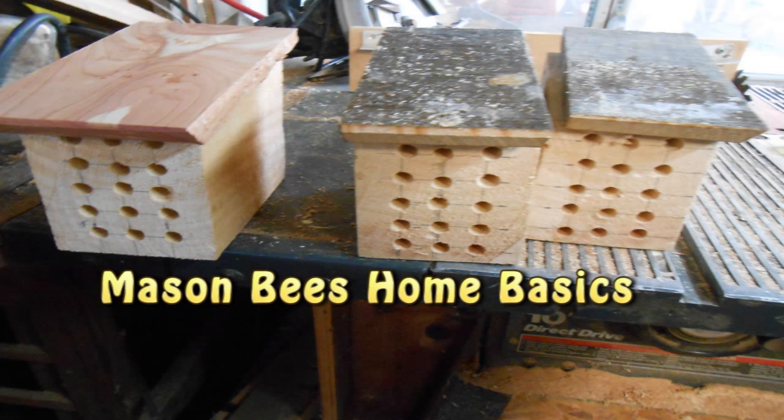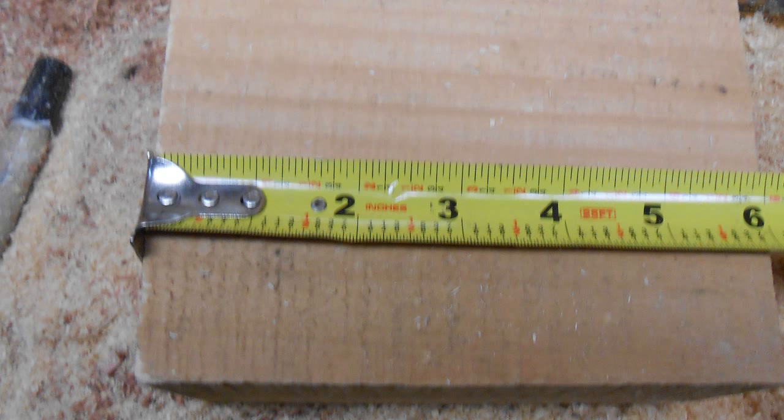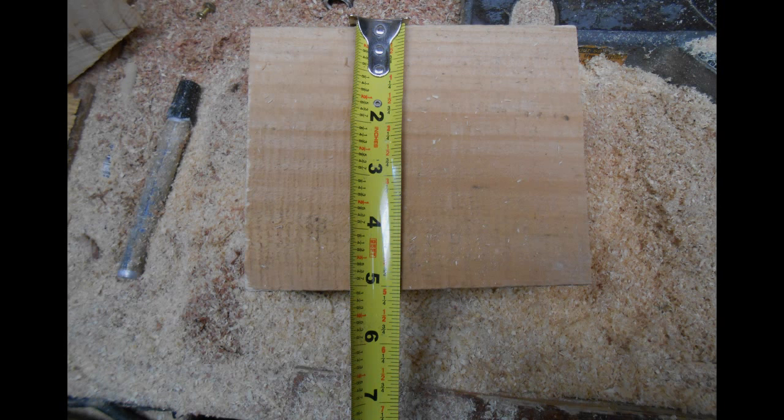Okay, now we'll go over some of the basic information you will need to know to build your own mason bee house. To start with, the block would need to be 6 inches deep. And for mine, I made it 5 inches wide.